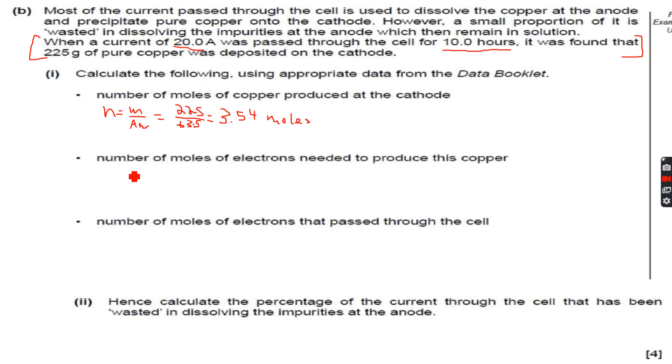The second thing we need to calculate is the number of moles of electrons needed to produce this copper. Let's first write the equation: Cu²⁺ ions gain two electrons to give Cu metal. This means that every two moles of electrons form one mole of copper, so copper to electrons is a 1:2 ratio. The number of moles of electrons will be equal to 3.54 times 2,